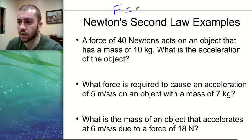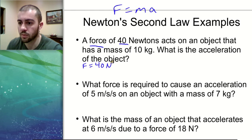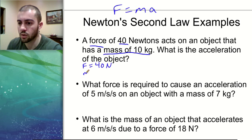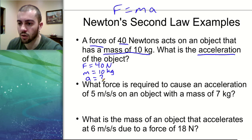In the first example, we have a force of 40 Newtons acting on an object with a mass of 10 kilograms, and we want to find its acceleration. The easiest way to solve these problems is to list out all the information you have in terms of variables. The formula is F equals MA, involving force, mass, and acceleration. So: force is 40 Newtons, mass is 10 kilograms, and acceleration is our unknown.